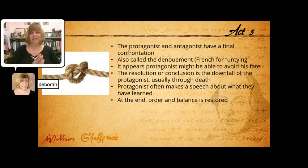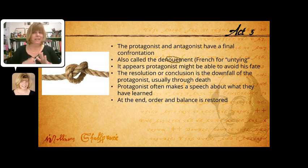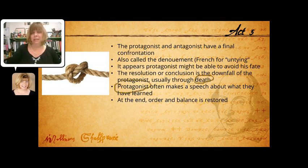In Act Five, our final act, we come to the final confrontation between the antagonist and the protagonist. This is sometimes referred to as the denouement — a French word literally meaning the unraveling or the untying. There's usually a moment where it looks like the protagonist might be able to avoid fate, a last-minute chance for things to work out. But the resolution is usually the downfall of the protagonist in a tragedy, usually through death. The protagonist often makes a speech about what they've learned.